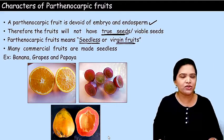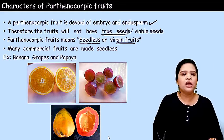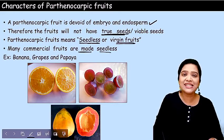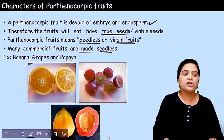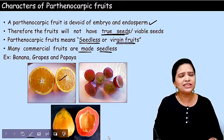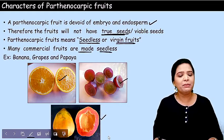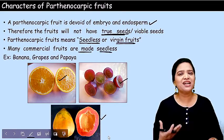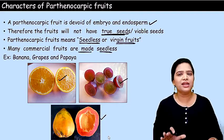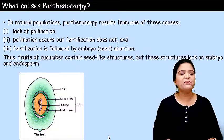Many commercially produced fruits are seedless. For example, orange, many varieties of grapes, banana, papaya — many commercially available fruits nowadays are all parthenocarpy fruits.